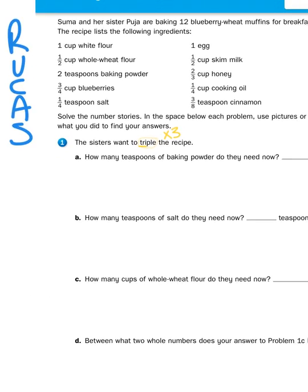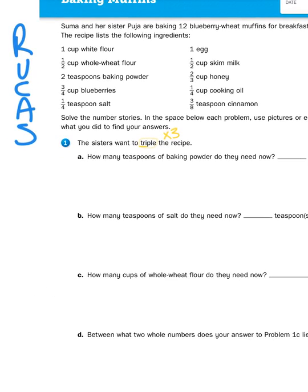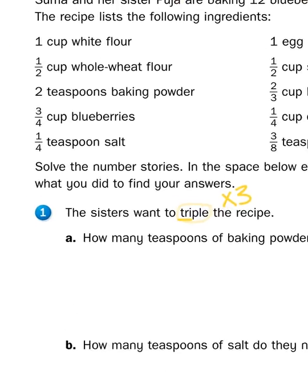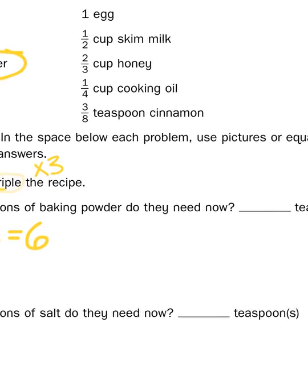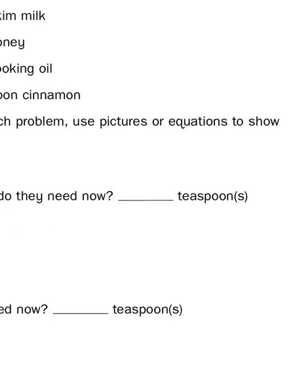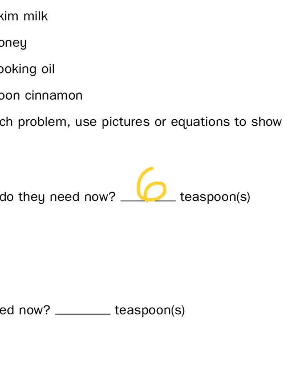So in the first problem, 1a, how many teaspoons of baking powder do they need? I just need to look up here at my recipe list, and I see that there are two teaspoons required. And to triple that recipe, I'm just going to multiply that by three. Well, two times three is going to give us six, so they must need six teaspoons to triple that recipe.